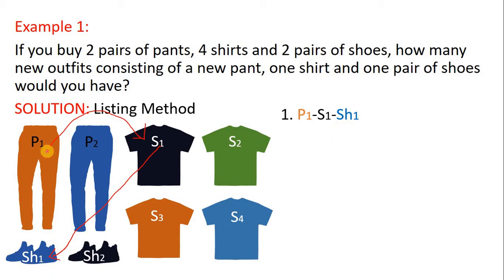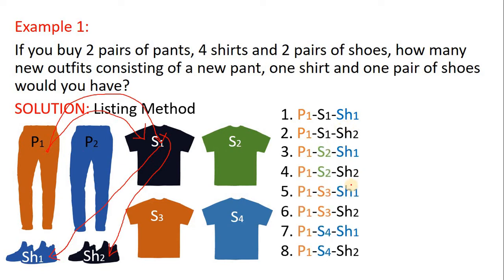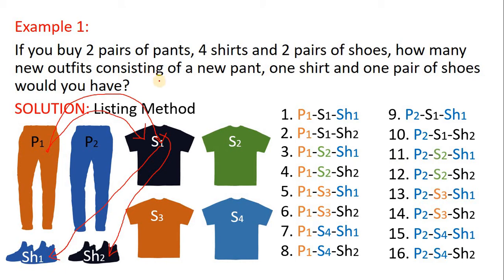Another combination: you still start with P1, then pair it with shirt number one and shoes number two — so that would be P1, S1, and SH2. If you list all the possible combinations without any repetition, you'll end up with 16 new outfits consisting of a new pair of pants, one shirt, and one pair of shoes. This is the listing method.